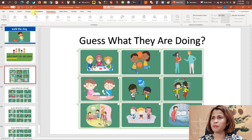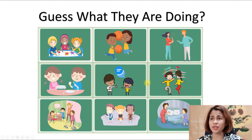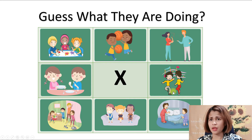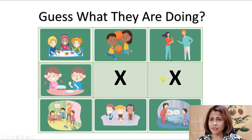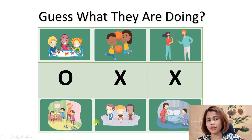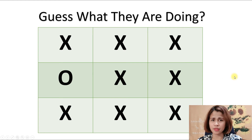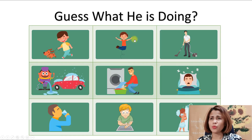Here's how the game works. Students guess what they are doing and make positive sentences — for example, 'They are talking' or 'They are dancing.' You can see there are X's on the board, which means those answers are not correct. The students have to find the circle. For example, if a student says 'They are setting the table,' that gets one point. There is only one circle, meaning only one correct answer.